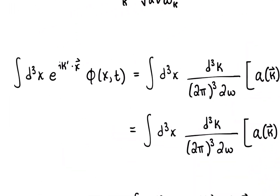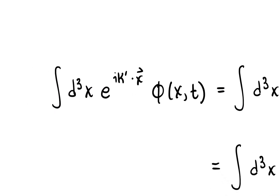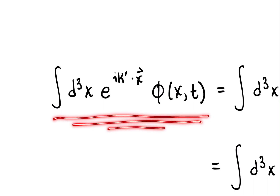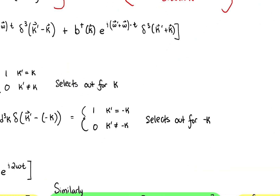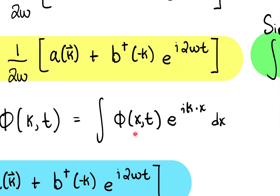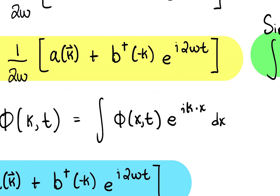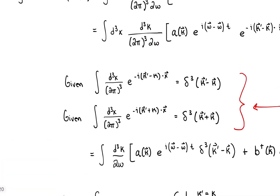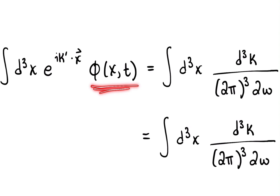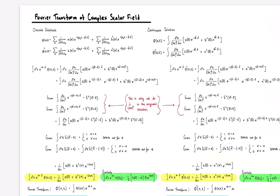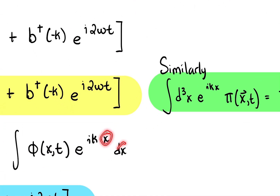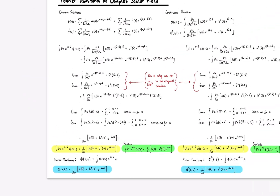Let's start by considering this mathematical object right here. This looks like a Fourier transformation. If we want to go from position space to momentum space, we do something that looks like this — this is a Fourier transformation of our field. We're doing the same thing here: here's our field, here's the factor needed for the Fourier transformation, and we're integrating over this spatial element.